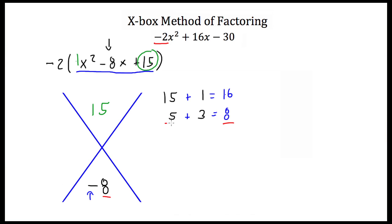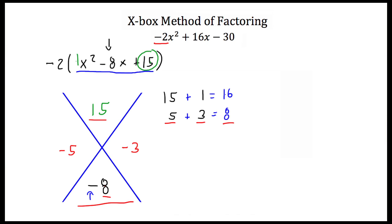So our factors are 5 and 3. However, this is negative. You've got to pay attention to this negative on the final term. Since this is negative, that means both of these factors are negative, because these two numbers have to add together to get this number and multiply together to get that one. Negative 5 times negative 3 is positive 15. Negative 5 plus negative 3 is negative 8. So those are our factors.